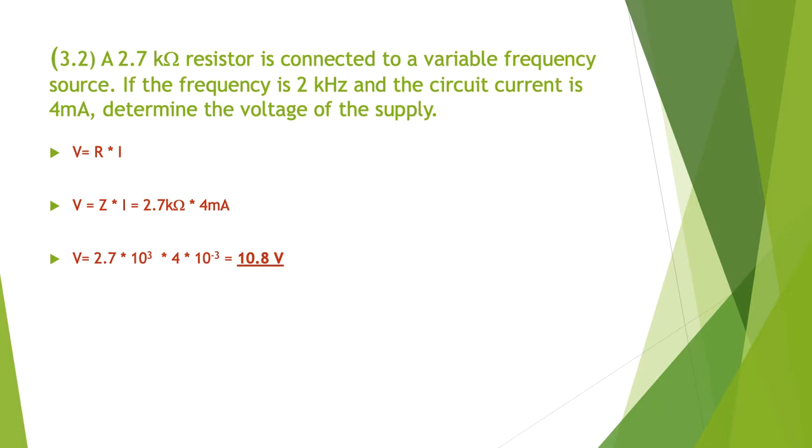So when we do the maths we come out at 10.8 volts. Our 2.7 multiplied by 10 to the 3 multiplied by 4 times 10 to the minus 3 gives us 10.8 volts.